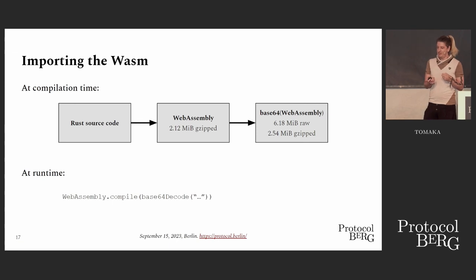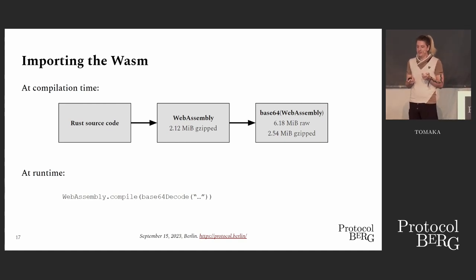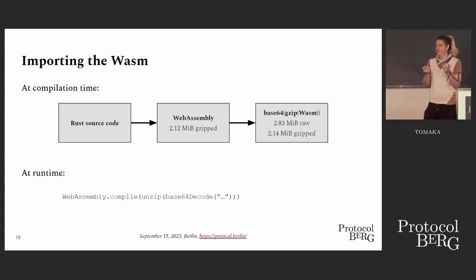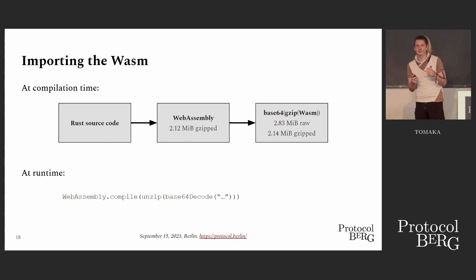However, base64 should not change the entropy, but apparently it does — it increases the size quite a lot. We noticed that if you compress it before, the size remains the same. So now we have to compress the WebAssembly and decompress it at runtime — workaround number two.